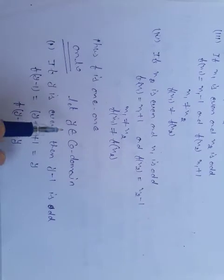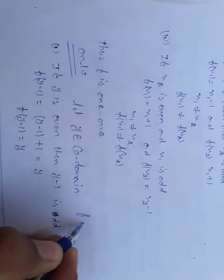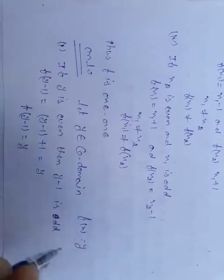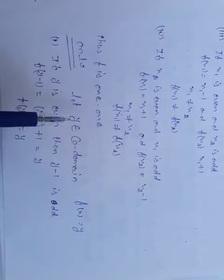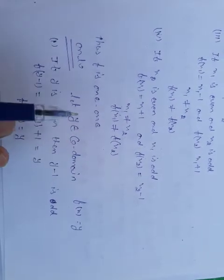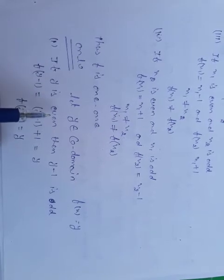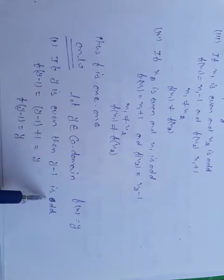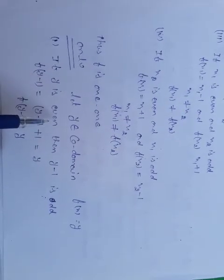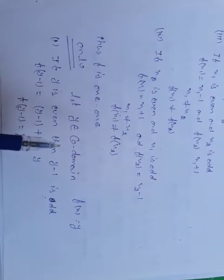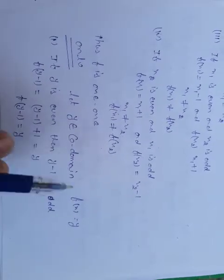For onto: let y belong to the co-domain. We need f(x) = y for some x. Now y depends on whether y is even or odd, since natural numbers are either even or odd. If y is even, then y − 1 is odd; if we add or subtract 1 from an even number, we get an odd digit.